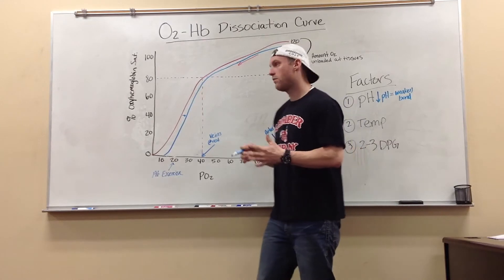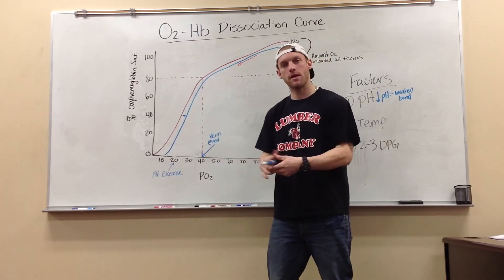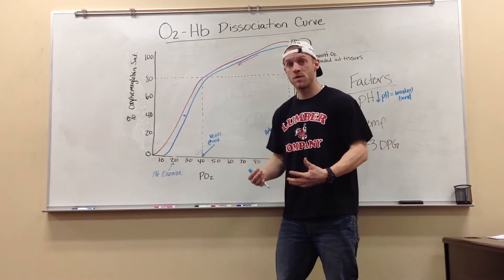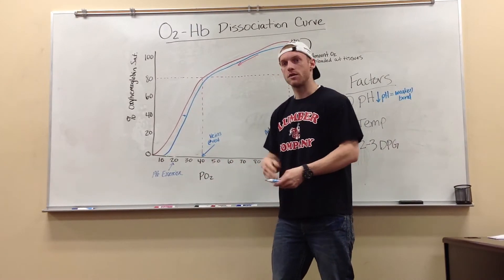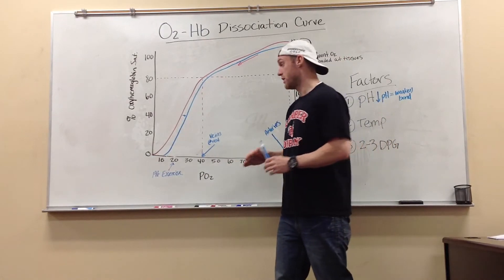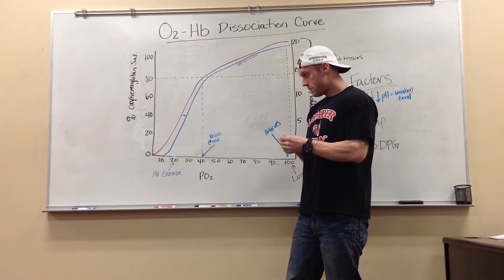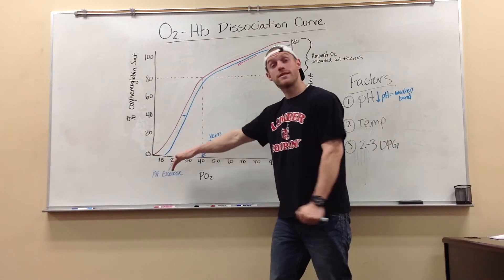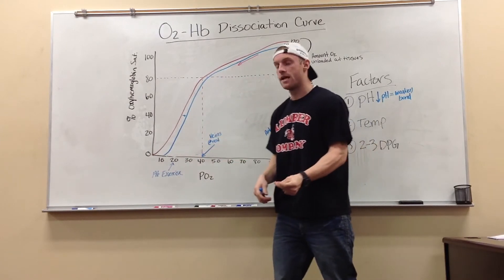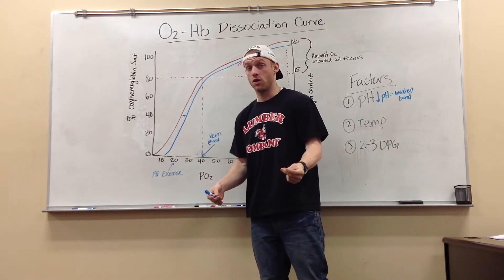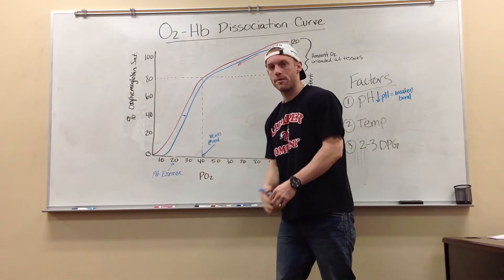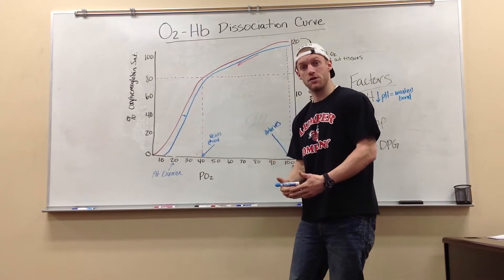And you're probably like, why do we want it to be unloaded easier? Well, we want it to be unloaded easier at the tissue because when we're exercising, we need that oxygen to keep up with the amount of work that each muscle group or single individual muscle is doing. And the more intense the exercise gets, the lower that pH will get because it needs more oxygen quicker. So the more I shift this to the right, the quicker I'm going to be able to unload my oxygen at the tissues.